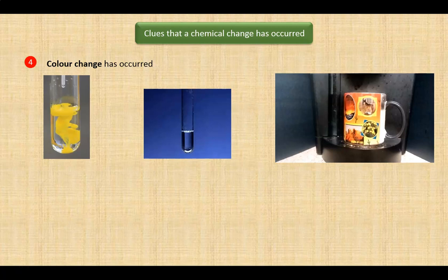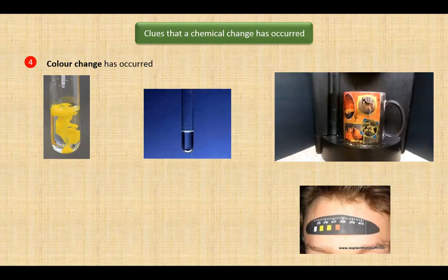If molecules undergo a change in their structure, this is considered a chemical change. Although we can't see the changes in the molecules, we can see their effects. The pigments in the cup change from black to white at high temperatures and then back to black at room temperature. So this example actually shows a chemical change. This temperature strip on the forehead acts in a similar way.